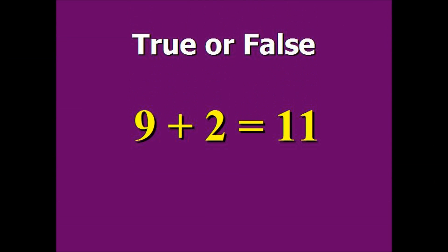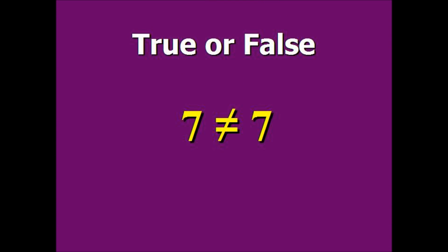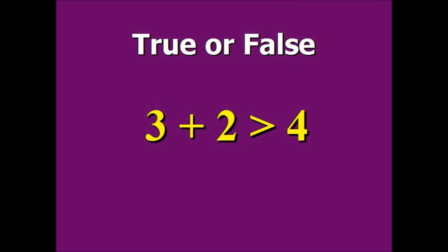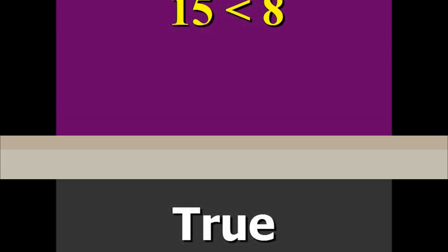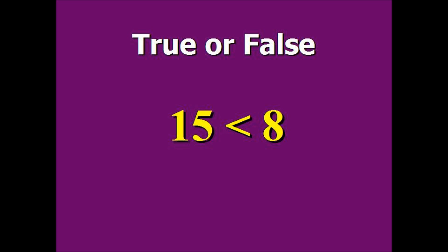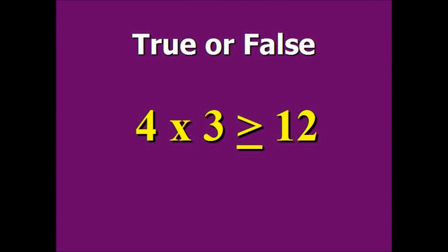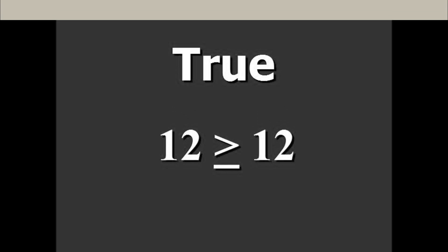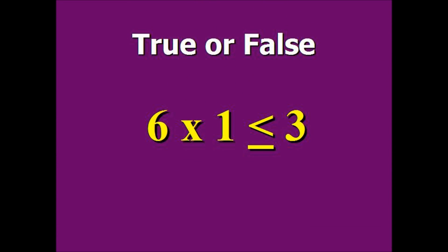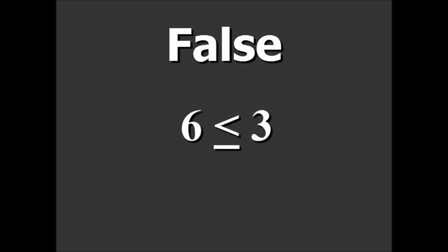Now let's go over a few true and false statements. 9 plus 2 equals 11 — that's true. 7 is not equal to 7 — that's false. 3 plus 2 is greater than 4 — that's true, because 3 plus 2 equals 5 which is greater than 4. Now, 15 is less than 8 — that's false. 4 times 3 is greater than or equal to 12 — that's true, because 4 times 3 equals 12. 6 times 1 is less than or equal to 3 — that's false, because 6 times 1 is 6 which is greater than 3, not less than.